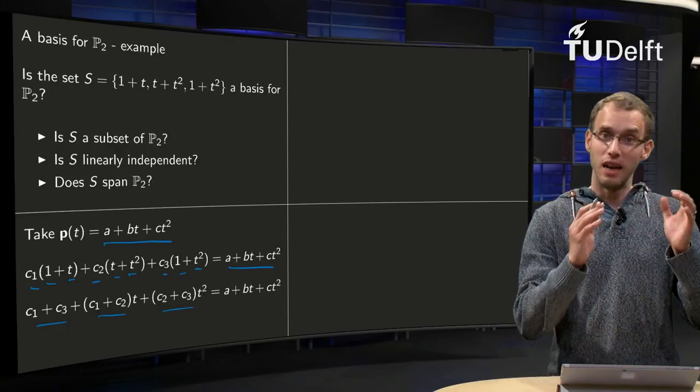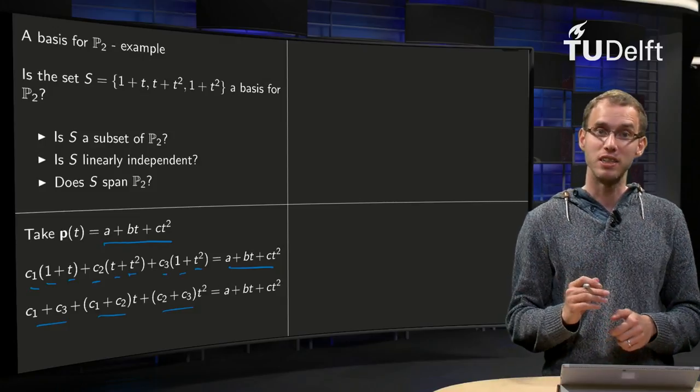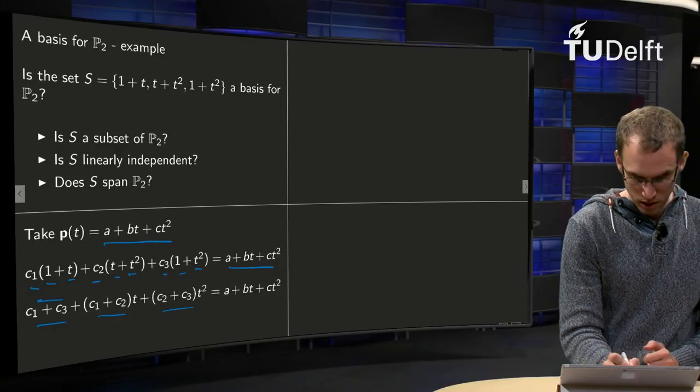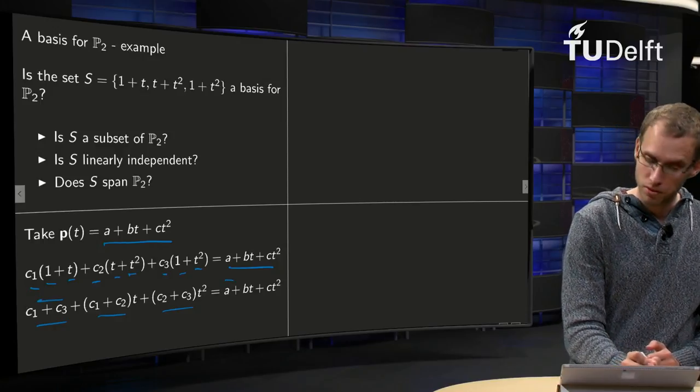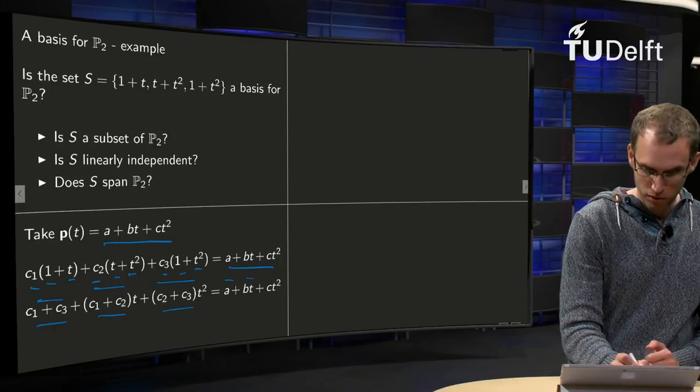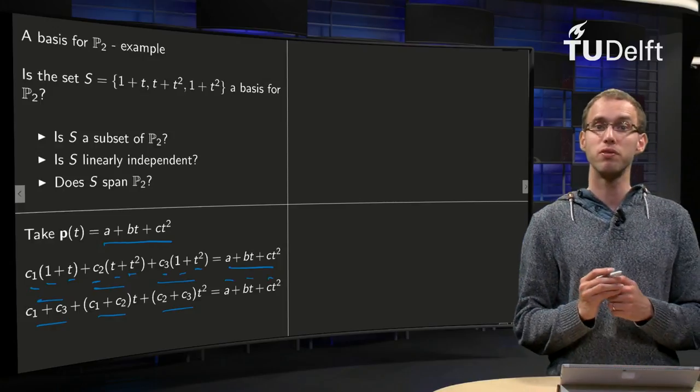And now we see that the left hand side is only equal to the right hand side if the coefficient in front of the 1 over here is equal to a, coefficient in front of the t over here equals b, and the coefficient in front of the t squared equals the coefficient in front of the t squared over there.